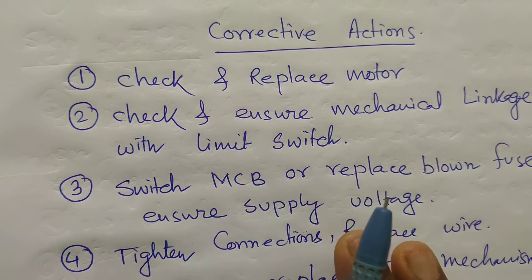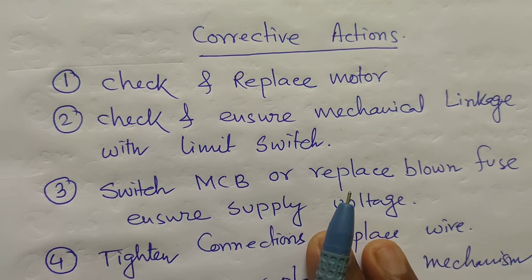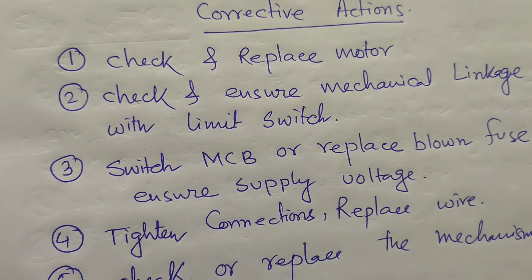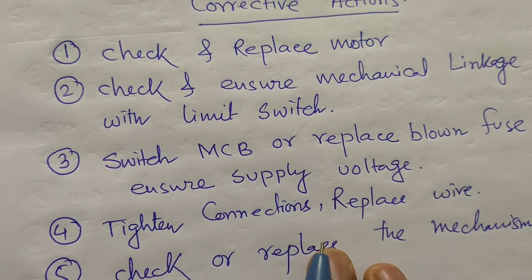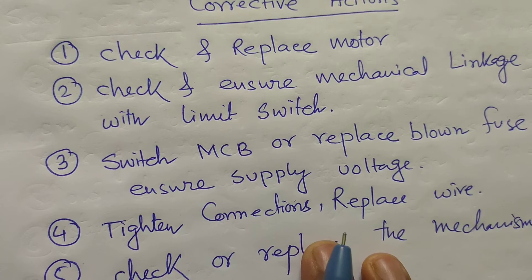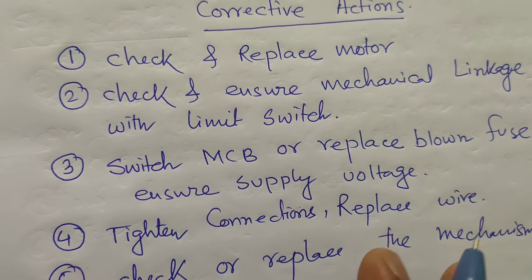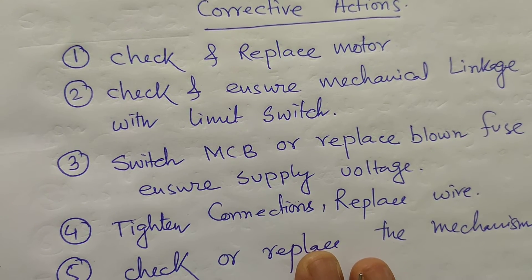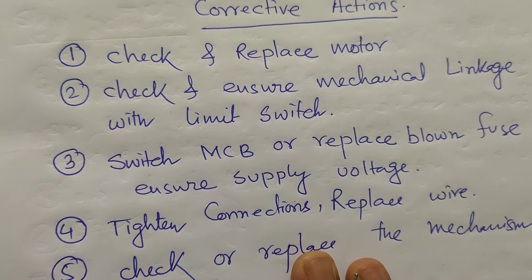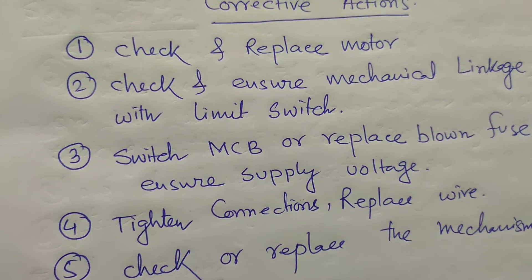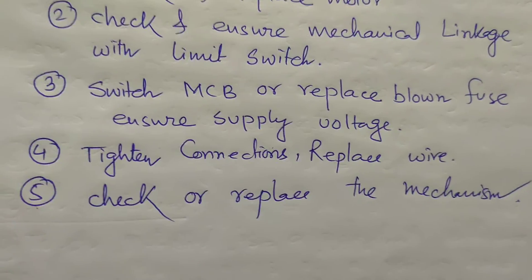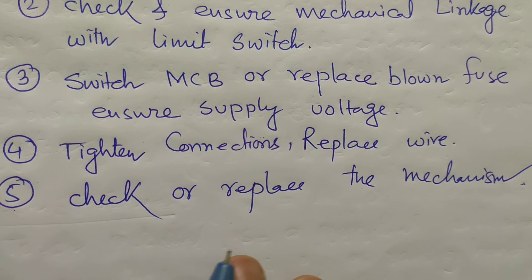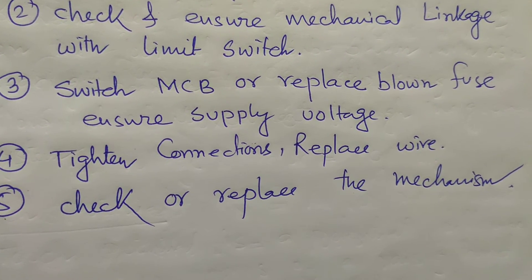Check the control circuit connections — the MCB connections are essentially the same across all types. Tighten the connections or replace the wire if any connection is loose. Check all nuts and terminals for tightness — if connections are loose, the motor cannot run and the spring will not charge. Tighten all connections during maintenance, and if the problem persists after tightening, replace the wire for a permanent solution.